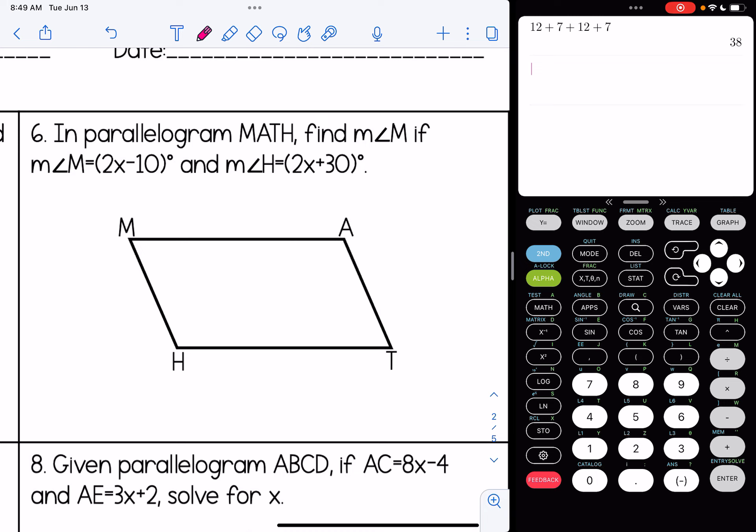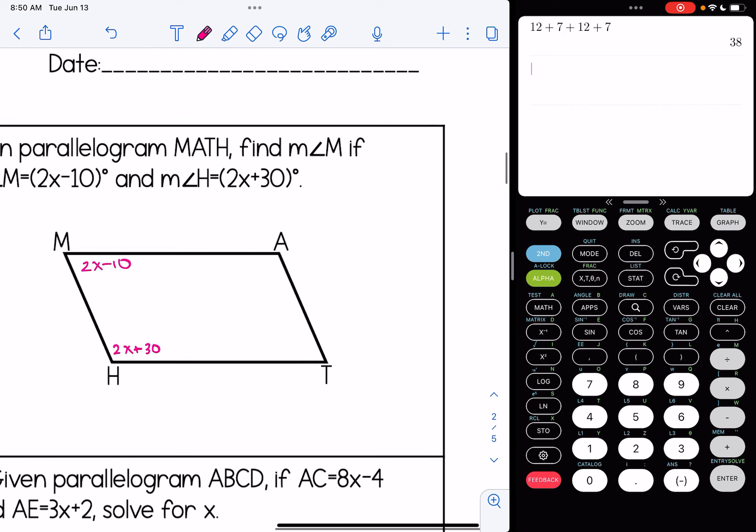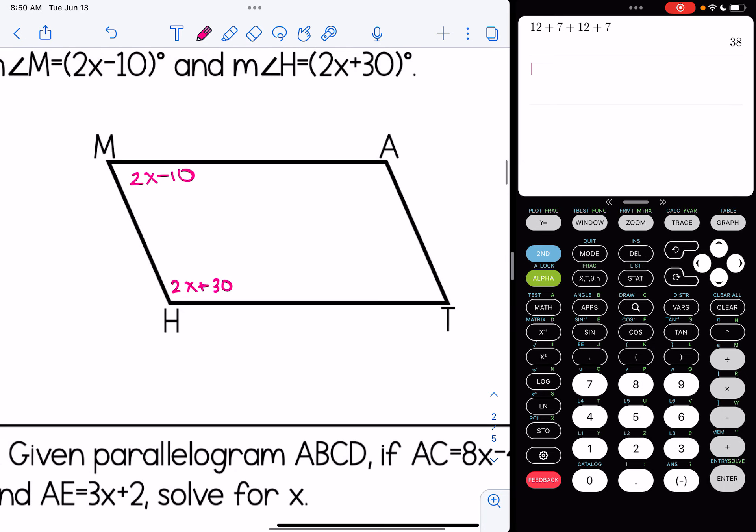Number six, in parallelogram MATH, find measure of angle M if M is 2X minus 10 and H is 2X plus 30. Well, these angles are supplementary to one another. So 2X minus 10 plus 2X plus 30 equals 180. Combine like terms. I'm going to subtract the 20 to the other side, trying to isolate our variable here, and then divide by 4 and I have X is 40. We were looking for the measure of angle M, so I'm going to plug in here 2 times 40 minus 10, and I get that the measure of angle M is 70 degrees.